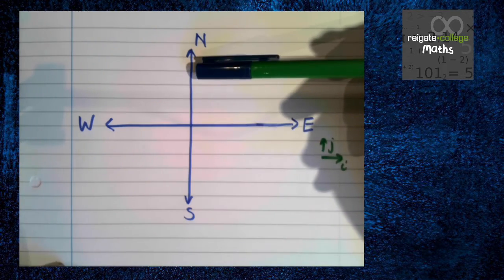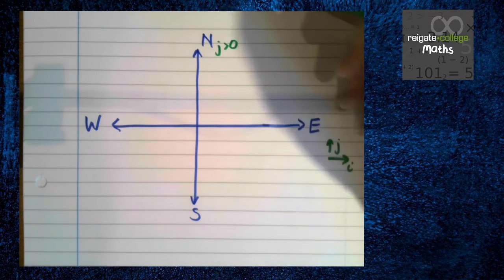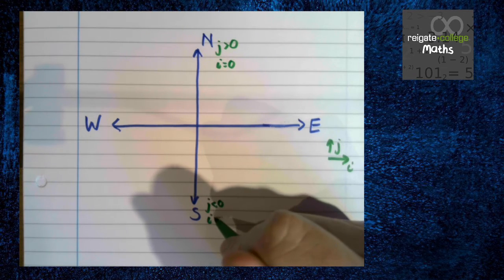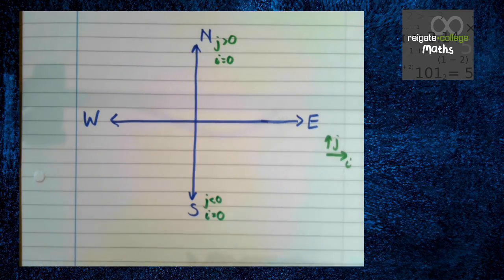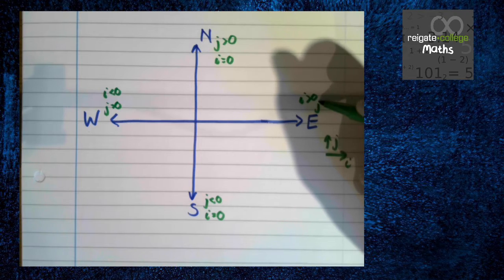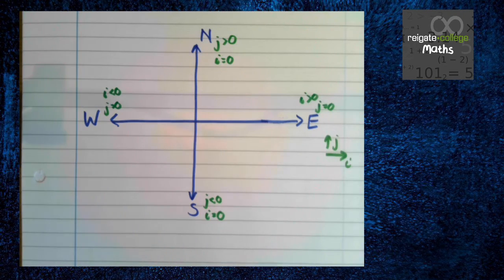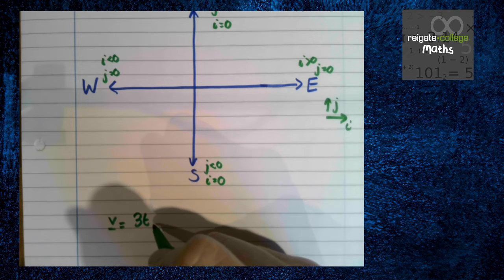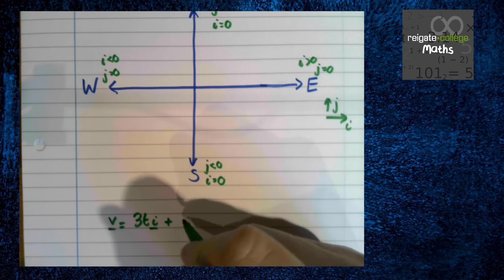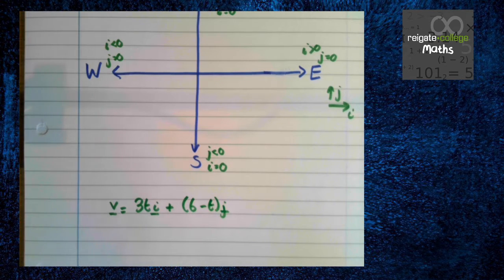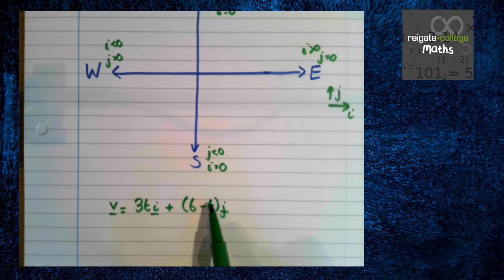So when we are traveling north, the j component is positive and the i component is 0 because it's just going straight north. Going south, it's the other way around. The j is negative and i is 0. And then going west, we have the i is negative and j is 0. And here we have i is positive, j is 0. So if we're moving in one of these four cardinal directions, it's just looking at one of the things. So for instance, if we have the velocity of the particle is given by 3t i plus 6 minus t j, for instance, and we want to find the time when it's moving due east, we would set the j component equal to 0 to find the time. That kind of thing.